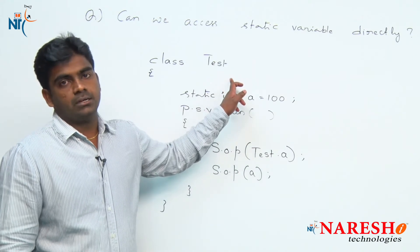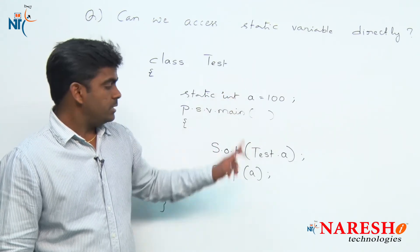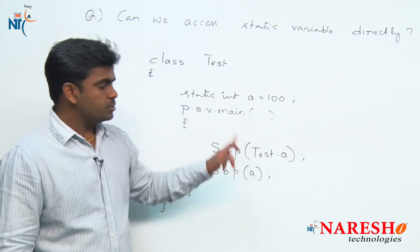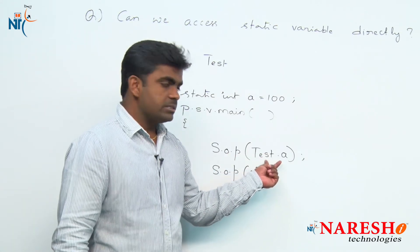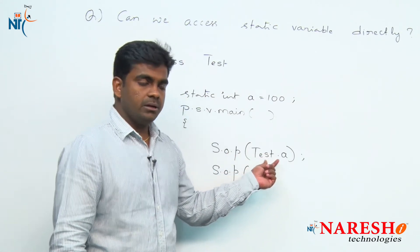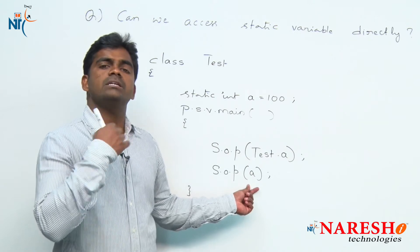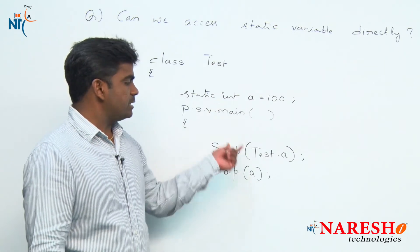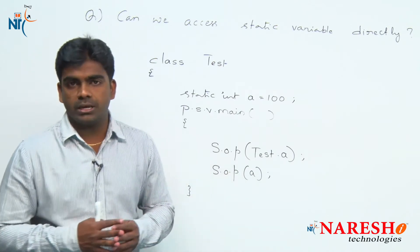next priority will be given to the global variable - the static variable. Here, when you access directly and local variable is not present, it will print the static variable only. In this case it is okay.